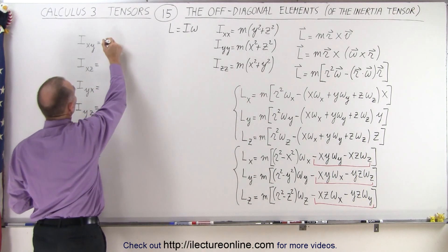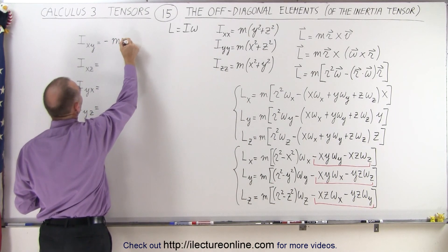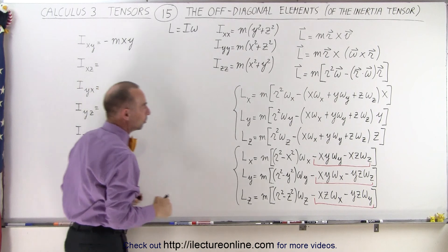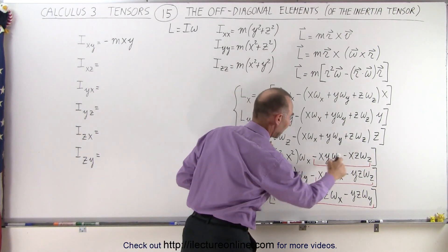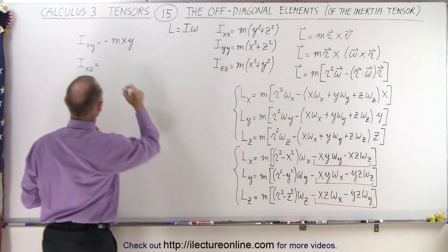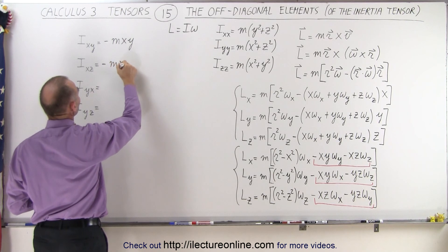So that means that here this term becomes minus the mass times xy. On this term, the xz term, it's the mass times the minus xz, that becomes minus m times xz.